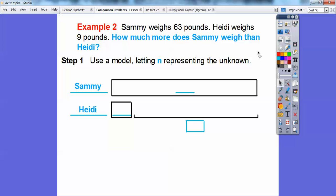So we know that Sammy weighs 63, so I'm going to put 63 right here, and then Heidi weighs nine. We know Heidi weighs nine right here. So this right here is going to be my unknown. That's how much more we need to get Sammy's weight right there. So that's going to be n.